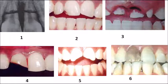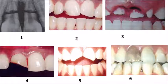The first picture shows root fracture, which belongs to Ellis Class 6. The second picture shows only a slight chip of the crown with no dentine involvement — that is Ellis Class 1. The third picture shows a deciduous tooth fracture, which belongs to Ellis Class 9.